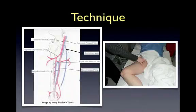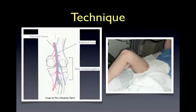Begin by identifying the common femoral vein at the inguinal ligament, scanning distally to the medial entry of the greater saphenous vein. Continue to scan down to the bifurcation of the common femoral vein into the superficial and deep femoral veins. Next, identify the popliteal vein in the popliteal fossa behind the knee and scan distally to the trifurcation of the popliteal vein.